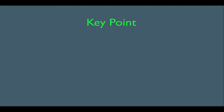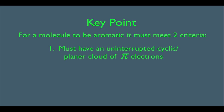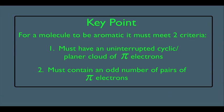In this online lecture, we're going to see what it takes to be an aromatic molecule. For a molecule to be aromatic, it must meet two criteria. Number one, it must have an uninterrupted cyclic planar cloud of pi electrons, and two, it must contain an odd number of pairs of pi electrons. Let me show you how to use these two things to verify if a molecule is aromatic.